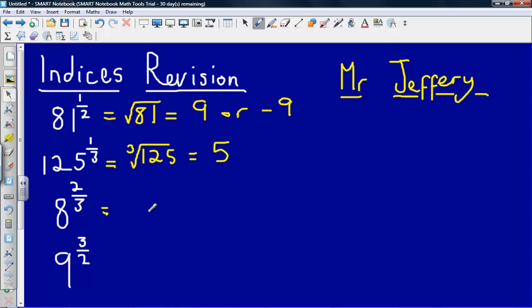Now onto 8 to the power of two thirds. So this means that we have 8 cube rooted, and then that is raised to the power of the numerator. So it is the root of the denominator raised to the power of the numerator. So the cube root of 8 would give us 2, and then squaring that will give us 4. So 2 times 2 gives us 4. So 8 to the two thirds gives us 4.